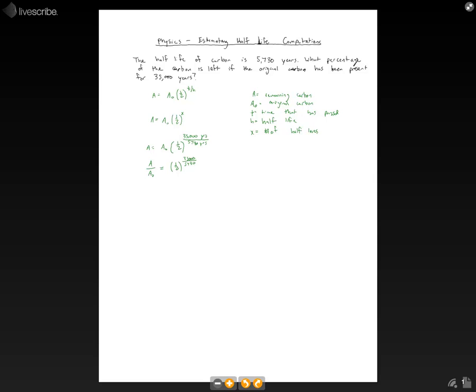But we also know it should be greater than 5. So I'm going to estimate that number to be about 6. That's an estimation, of course. If that's our estimate, we know that we go through 6 half-lives.